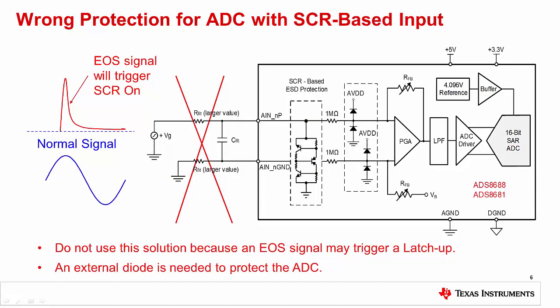On the previous slides, we looked at the ADS8588S, which is an example of a data converter with an analog front end that has an internal back-to-back Zener diode clamp. A similar device, the ADS8688, also has an integrated analog front end, but uses an internal SCR type ESD protection circuit to protect the inputs. The SCR type ESD protection is only intended for out-of-circuit protection of the device. This means that the ESD protection protects the device during manufacturing, test, and assembly when it is not powered up. This type of input protection cannot be used to protect the device during normal operation, as it will remain active once triggered. The only way to turn off this type of protection is to cycle the power on the device.